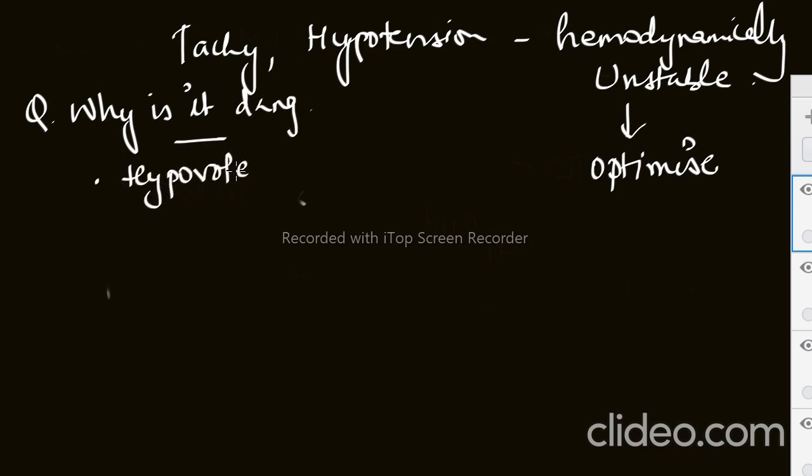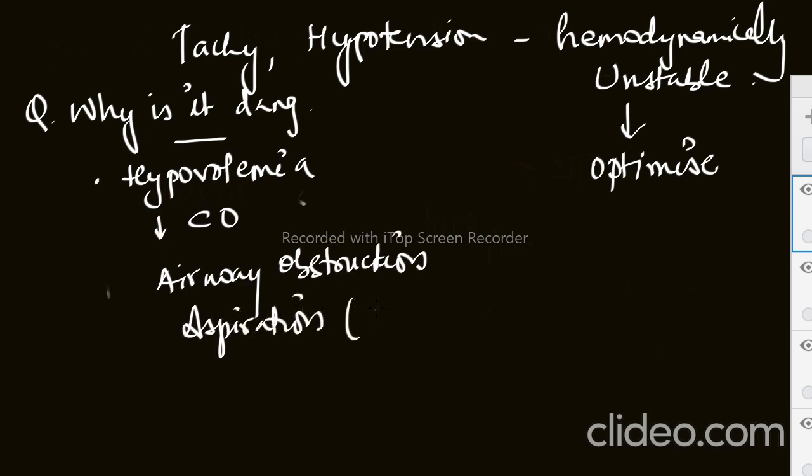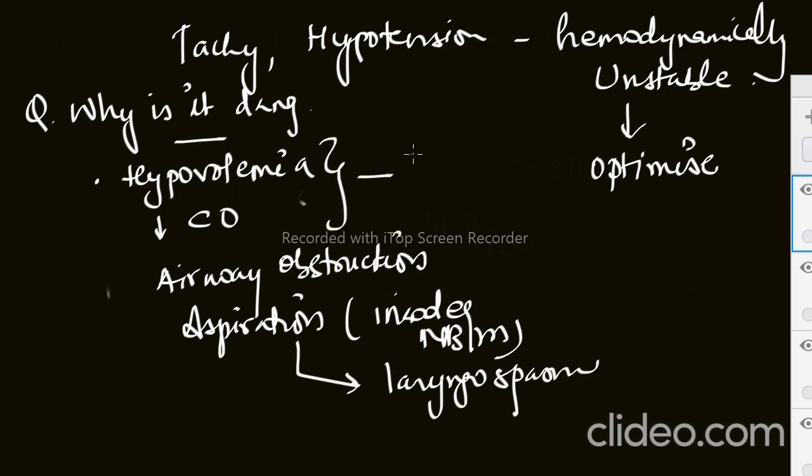First is hypovolemia - these patients are hypovolemic. The patient will be having low cardiac output, airway obstruction due to previous intubation, and there is risk of aspiration due to inadequate NBM status. This can lead to laryngospasm. Hypovolemia and low cardiac output can lead to hemorrhagic shock.